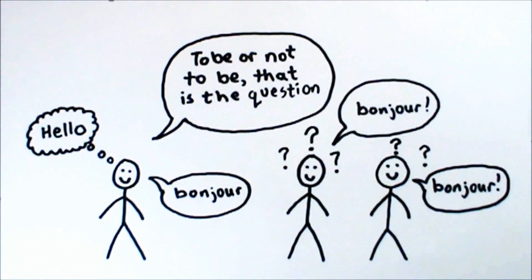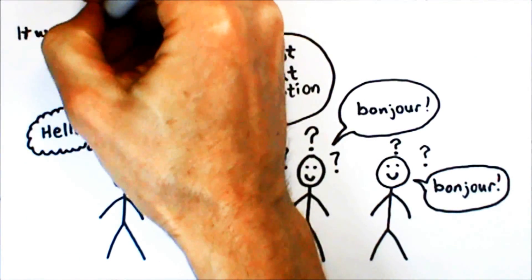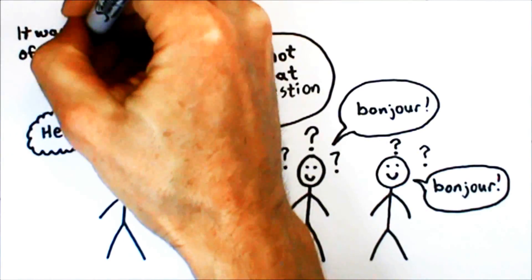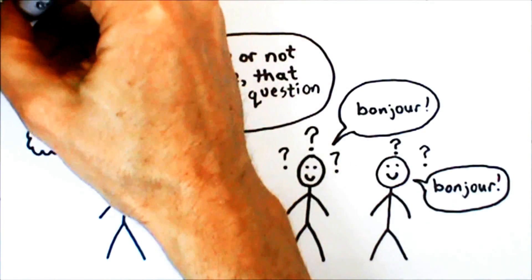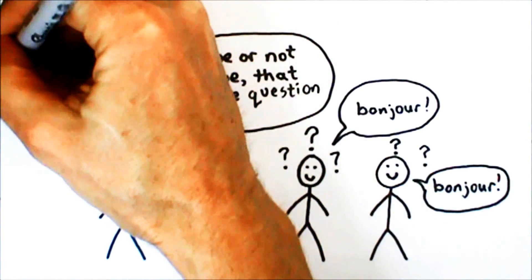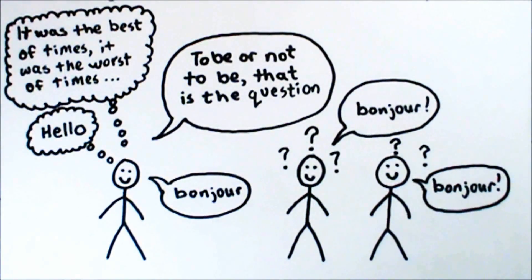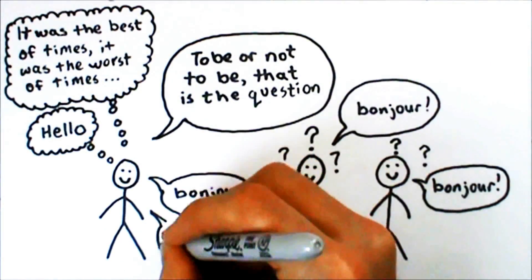At the same time, however, no matter how clunky my French might have been, I never ceased to be an English speaker. With sophisticated thoughts that I could fluently express in English, it's just that, in accepting the limitations of a French nature, I was also choosing to set aside the use of my English nature.